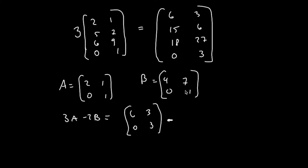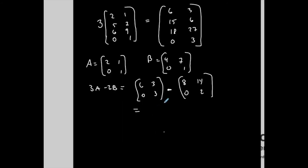And you're subtracting minus the matrix B multiplied by a scalar 2, so 8, 14, 0, 2. And then you're just subtracting the two matrices like we did in the last video. 6 minus 8 is negative 2, 0 minus 0 is 0, 3 minus 14 is negative 11, 3 minus 2 is 1. So you can do a combination of scalar multiplication and addition and subtraction of matrices.